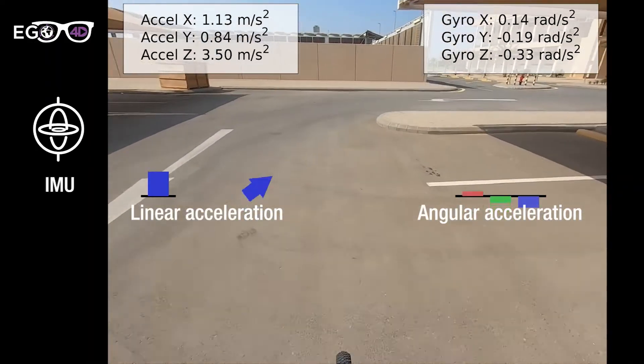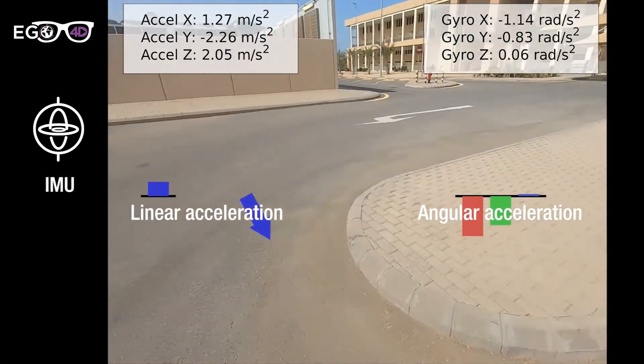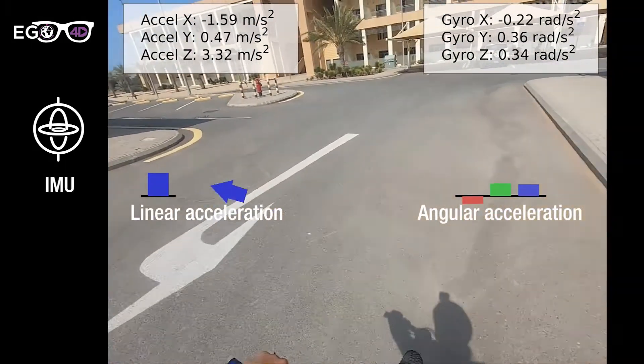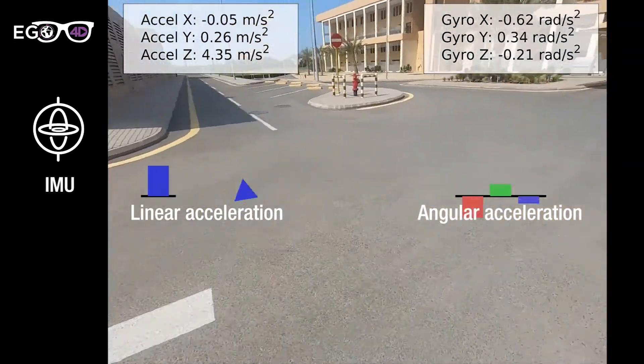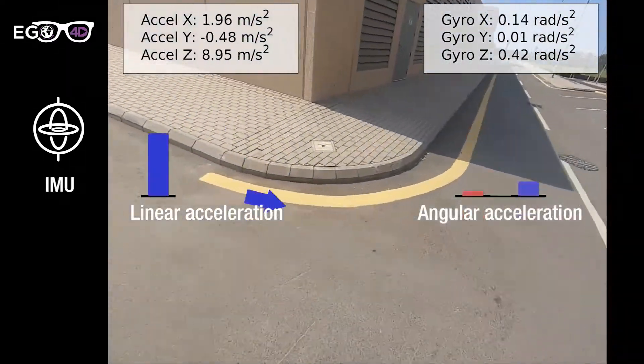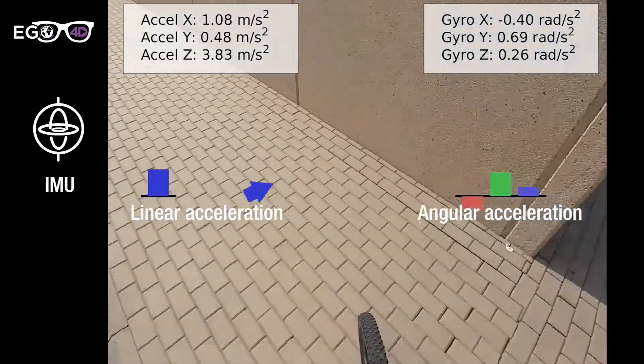Ego4D data includes inertial measurements. Here we show 3D acceleration and orientation that the camera wearer experiences while riding a bicycle.